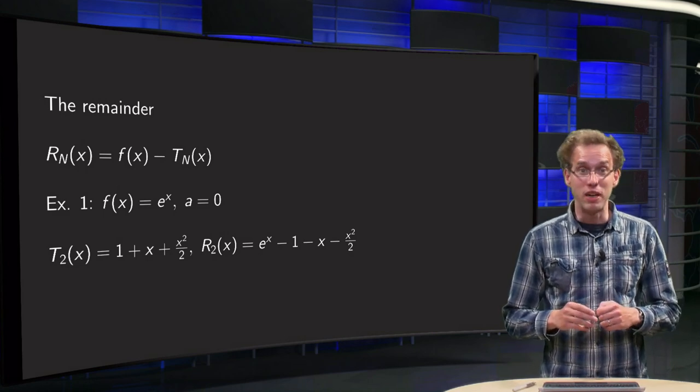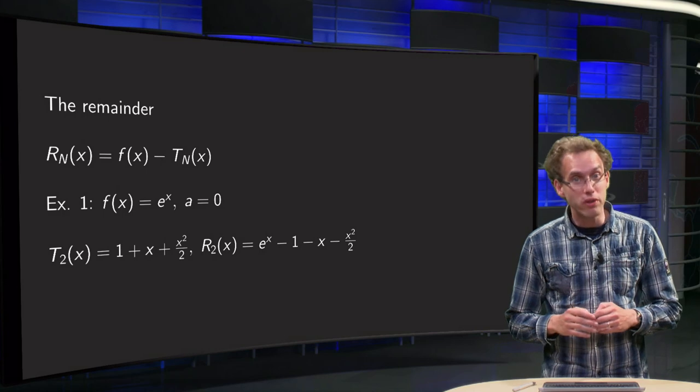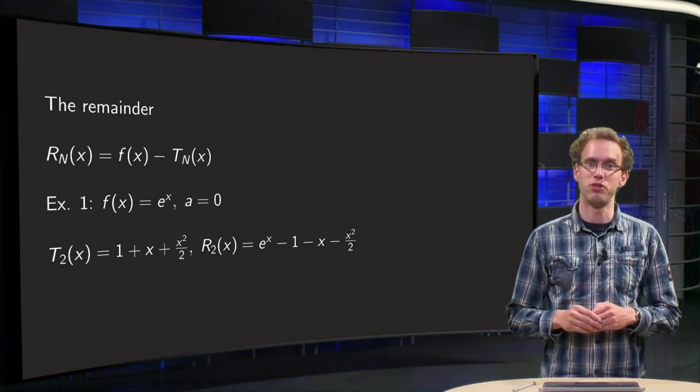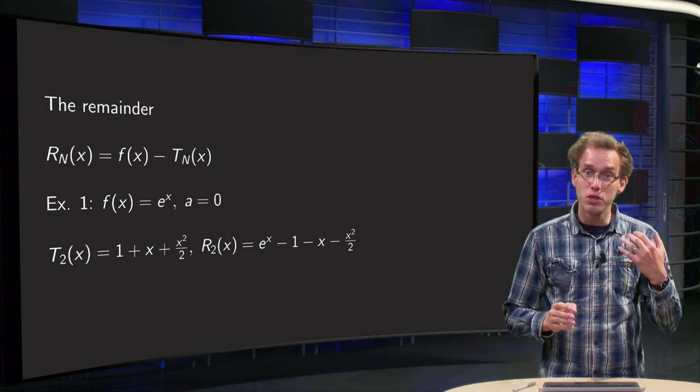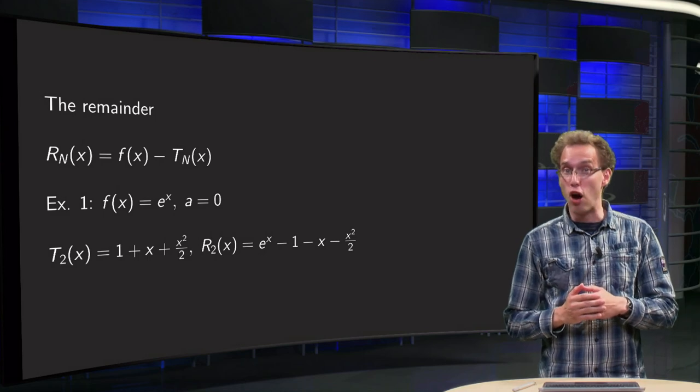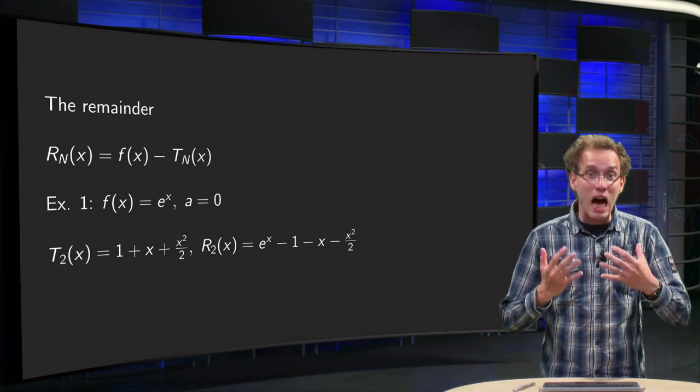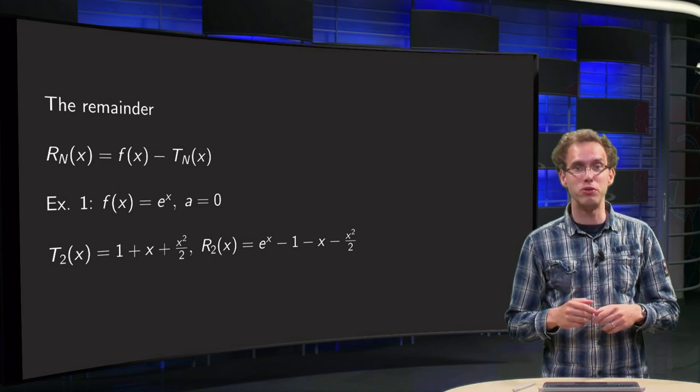If we approximate a function by its Taylor series, we do not want to compute all the infinitely many terms, of course. We would like to use a Taylor polynomial with, hopefully, not too many terms. But how do we know how many terms we have to use?